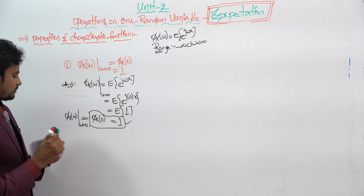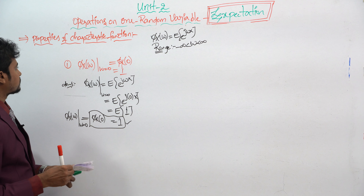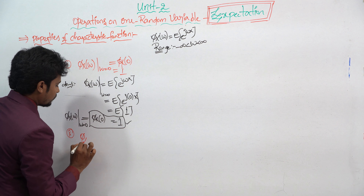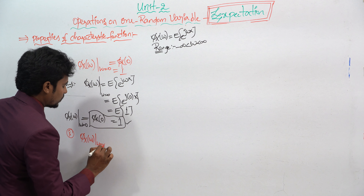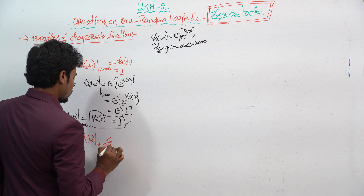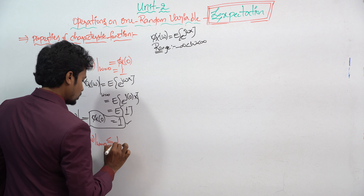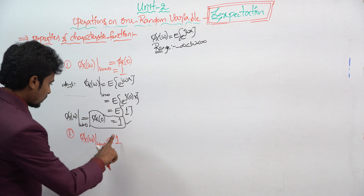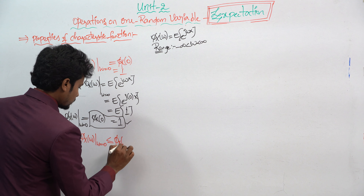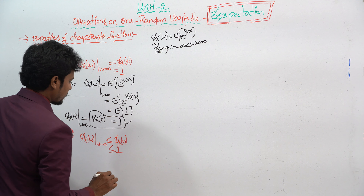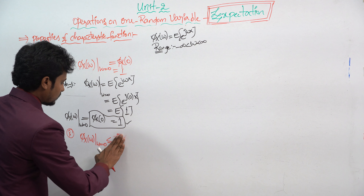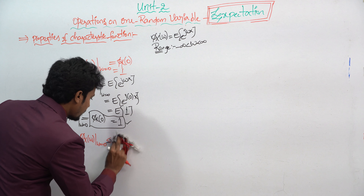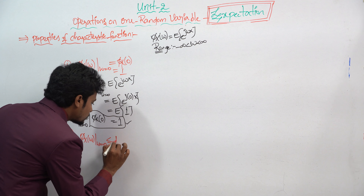The second property states that |φx(ω)| ≤ 1. Specifically, the modulus of φx(0) is less than or equal to 1. This is the second property we have to verify.